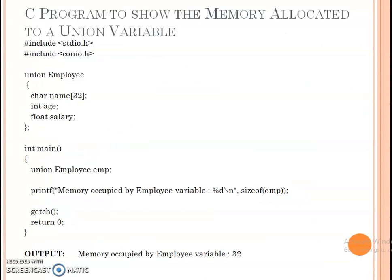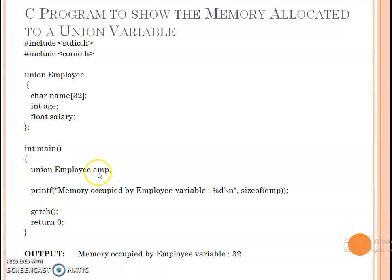First, we have a program with a union called employee. Here I have declared 3 variables. This is the structure or syntax of a union. In the main function, we have declared a reference variable so that the union members can be accessed using EMP. A printf statement is used to print the memory occupied by the employee variable. The size of EMP — the reference variable — will show the maximum memory allocated for this particular union, which is 32 bytes. So the output is: memory occupied by employee variable is 32.